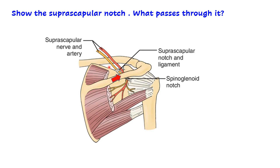Another question asked is to show the suprascapular notch and what passes through it. The notch is along the lateral part of the superior border and is bridged by a transversely placed ligament. Two structures pass here: one above the ligament and one deep to it. The suprascapular artery passes above the ligament and the suprascapular nerve passes deep to the ligament. A simple mnemonic: artery and above both start with A.